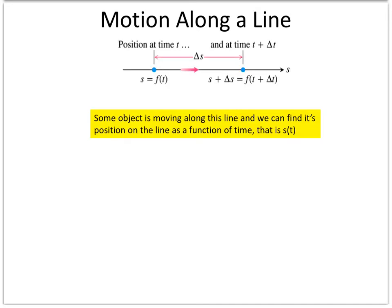Everything we've been doing has been functions — x, y, graphs. But we could look at just the motion along a line. This is where we kind of get away from saying the word 'slope' and instead say the slope is a rate of change — specifically, the rate of change of position.